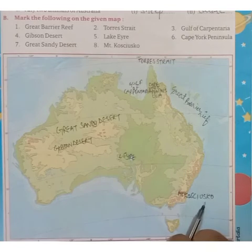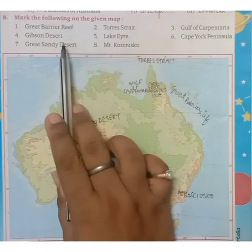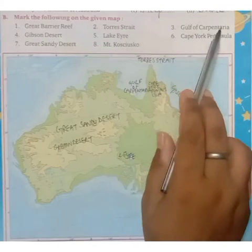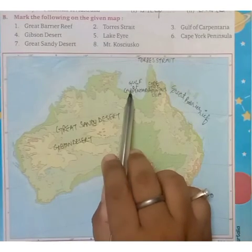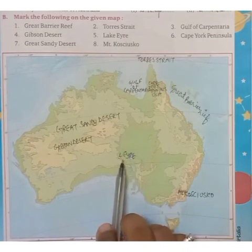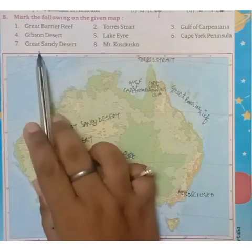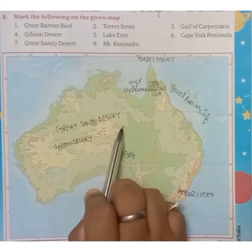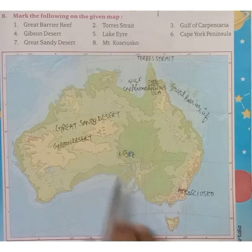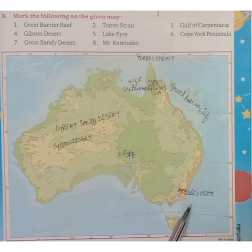To summarize: Great Barrier Reef is here, Torres Strait is here, Gulf of Carpentaria is here, Gibson Desert is here, Lake Eyre is here, Cape York Peninsula is here, Great Sandy Desert is here, and Mount Kosciuszko is here. Please do this exercise in your map activity book on page number 27. Thank you, students.